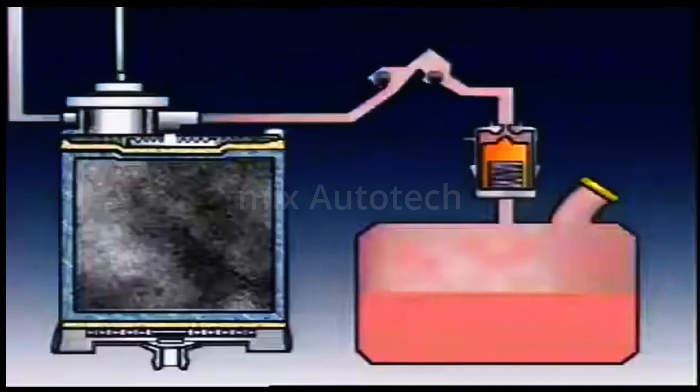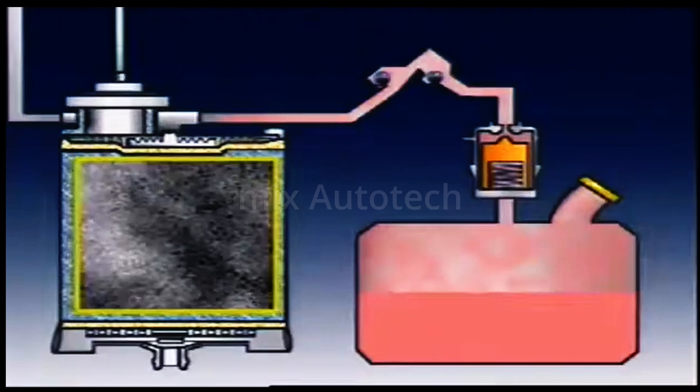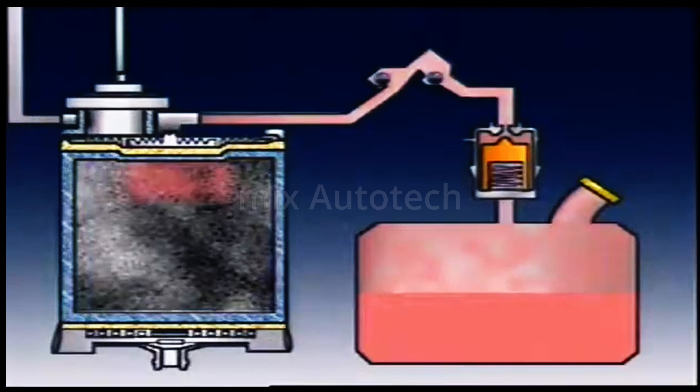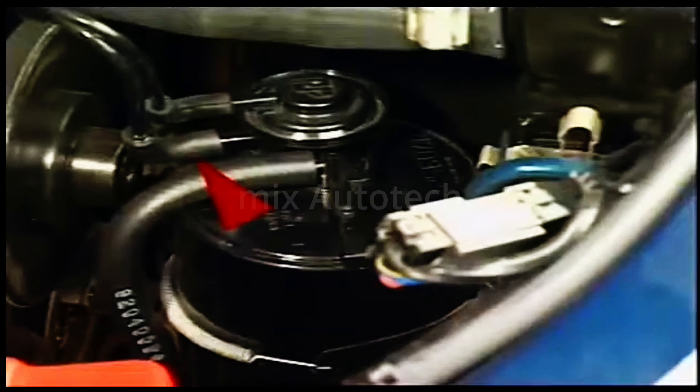Another kind of storage device is a canister of activated charcoal. Activated means the charcoal is porous with a large surface area, so it can store large quantities of fuel vapor. It has connections for the fuel tank vent line and the purge line, which carries the vapors to the intake manifold. In some designs on carbureted engines, it also has a connection from the carburetor bowl.